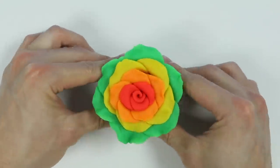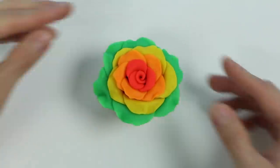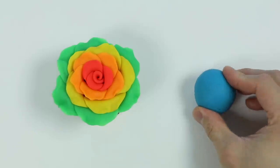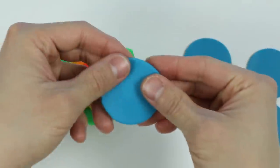Check it out, our rainbow rose cake is starting to look really nice. Now let's make blue rose petals. Let's follow the same steps as before.